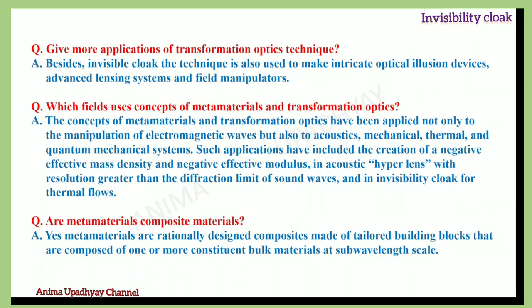Besides the invisible cloak, transformation optics is also used to make intricate optical illusion devices, advanced lensing systems, and field manipulators. The concepts of metamaterials and transformation optics have been applied not only to the manipulation of electromagnetic waves, but also to acoustics, mechanical, thermal, and quantum mechanical systems — including the creation of a negative effective mass density, a caustic hyperlens with resolution greater than the diffraction limit of sound waves, and an invisibility cloak for thermal flows.